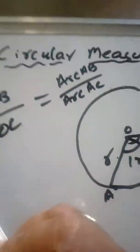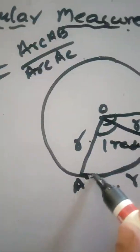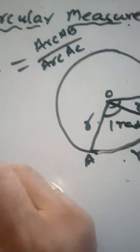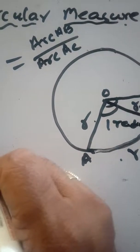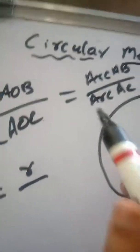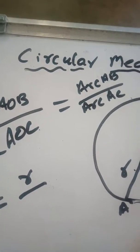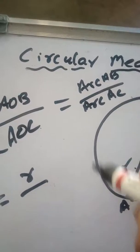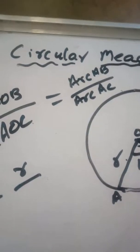Now, the length of arc AB is R. That means this equals R divided by arc AC. Arc AC is one-fourth of the total circle.